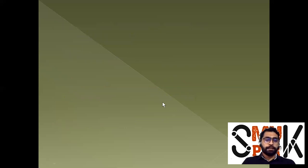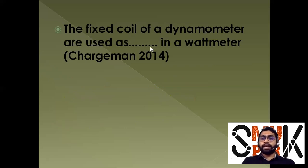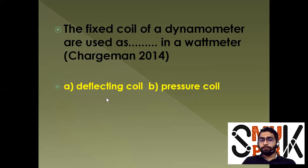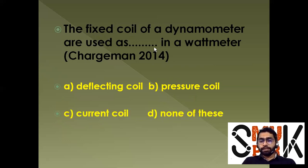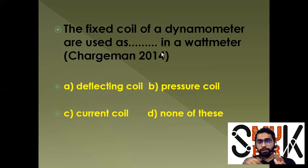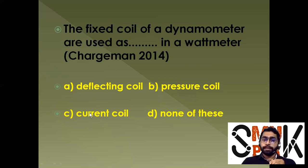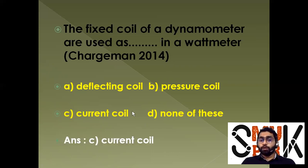The fixed coil of a dynamometer is used as a current coil in a wattmeter. In a dynamometer wattmeter, there is a fixed coil through which current flows — that is the current coil. The moving coil carries the voltage.